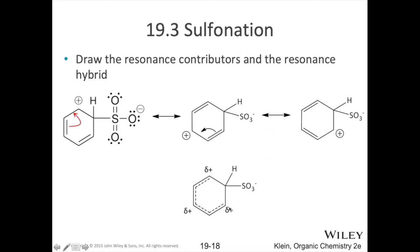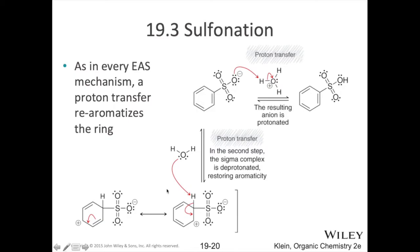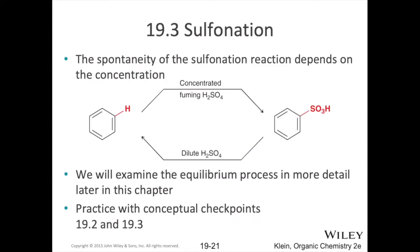Here are all the resonant structures and the hybrid showing that. Then, as before, some base can come along, pluck off that proton, and restore aromaticity. The product you have is your sulfonate group. If you protonate that, you get the corresponding sulfonic acid. Keep in mind, this is being done in the presence of sulfuric acid, so you have a pretty acidic solution that drives toward that protonated product. It turns out that if you use dilute sulfuric acid, the equilibrium shifts back towards the original benzene reactant. So having concentrated fuming sulfuric acid is what drives us toward that sulfonic acid product.